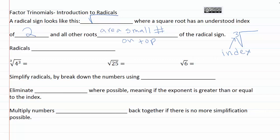So one thing that you should definitely understand about radicals is that they undo exponents. That means that if I had the third root of four raised to the third, the index of three is going to undo the exponent of three, and this would be equal to just a plain four.